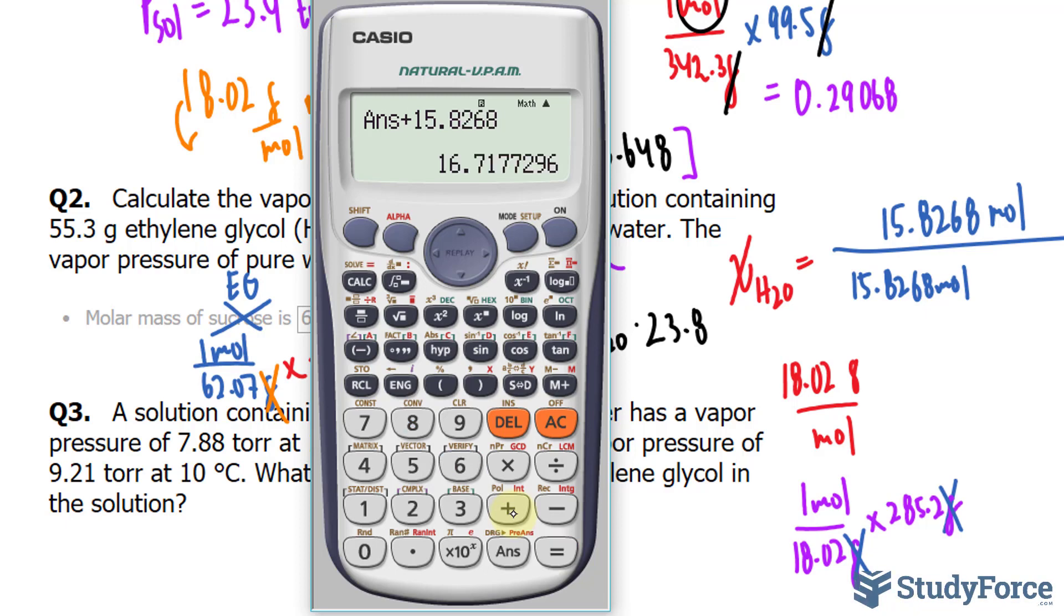That's the denominator of my fraction, and I'll take this number and divide it by that. 15.8268 divided by the number that I just found, I'll click answer to retrieve that, and I get 0.9467 as my mole fraction for the solvent.